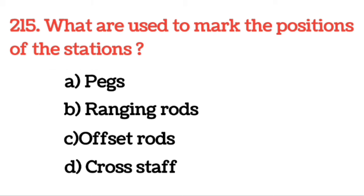Next question: What are used to mark the position of the station? Answer: Pegs. Pegs का use जो है station की position को mark करने के लिए किया जाता है।